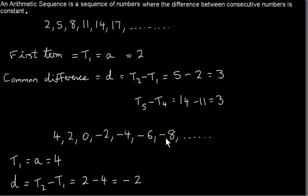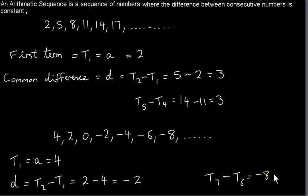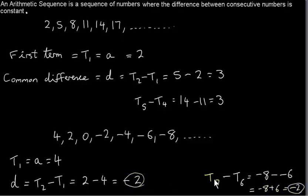Of course, we could have worked this out by taking the seventh term, which is actually minus 8, and subtracting the sixth term, which is minus 6. So we'd have minus 8 minus (minus 6), and that's minus 8 plus 6, which is minus 2. So we just take any term and subtract the previous term to get d.